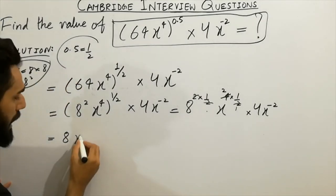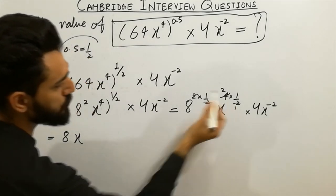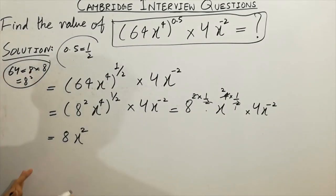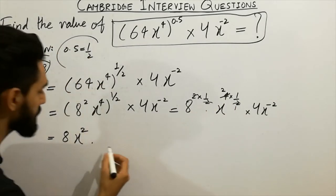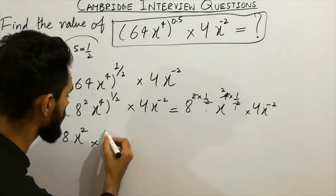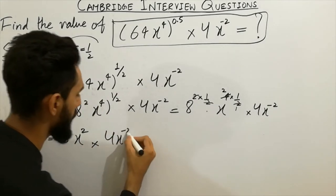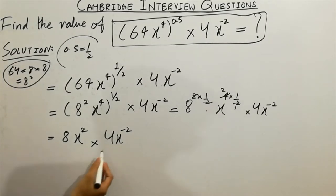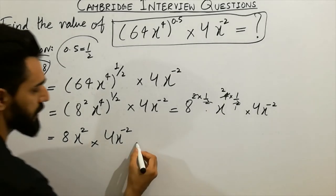Multiply 8x² by 4x^(-2). I hope you have cleared this point. Next step: x² multiplied by x^(-2). Next step: 8 times 4 will be 32.